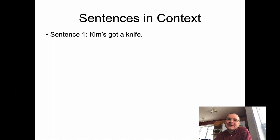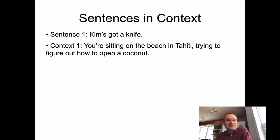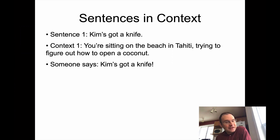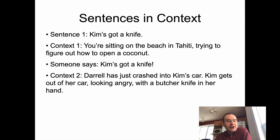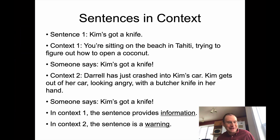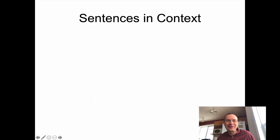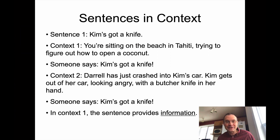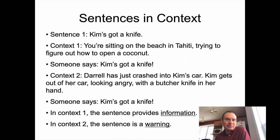I'll give you some examples of sentences in different contexts. Sentence one: 'Kim's got a knife.' The first context might be you're sitting on a beach in Tahiti trying to figure out how to open a coconut — the fact that Kim has a knife could help you out. Another context: Daryl has just crashed into Kim's car and Kim gets out looking angry with a butcher knife in her hand. That's not nearly so helpful. So in the first context, the sentence provides information; in the second context, the utterance is a warning. It's the same sentence used in both contexts.